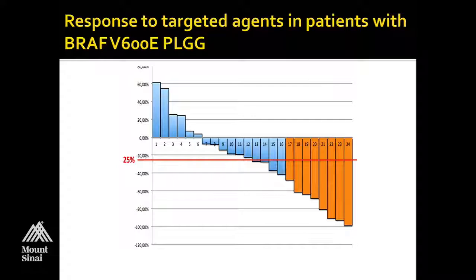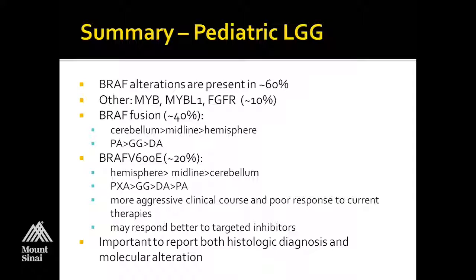To summarize the low-grade glioma findings: BRAF alterations are present in about 60% of patients overall. Other alterations including MIB-L1 and FGFR account for about 10%. About 40% of patients will have a BRAF fusion — most frequent in the cerebellum, then midline, least frequent in the hemispheres — most likely seen in pilocytic astrocytoma, less in ganglioglioma, and least in diffuse astrocytoma. V600E is present in about 20% — most frequent in the hemispheres, most commonly associated with PXA and ganglioglioma. These have a more aggressive clinical course and poor response to current therapies, but may respond better to targeted inhibitors.